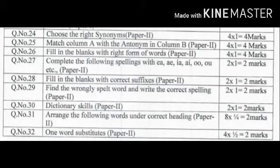Question number 28 is completing the spelling with suffixes, that is two marks. Question number 29 is identifying the wrongly spelled word, two into one equals two marks. And dictionary entry, two questions are given, two into one equals two marks.